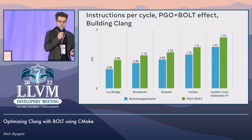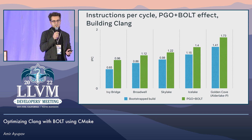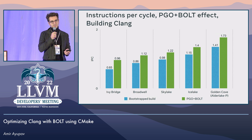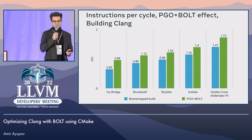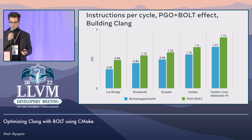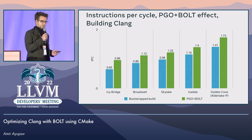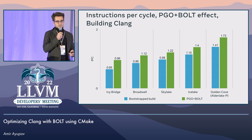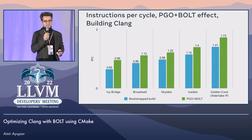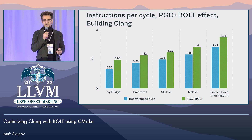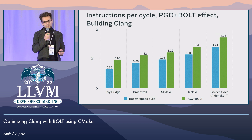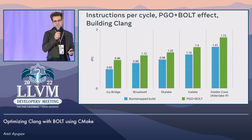For each architecture there are two bars: the first is IPC for the baseline bootstrapped build, and the second is for PGO plus Bolt. The trend is that with PGO plus Bolt, Ivy Bridge jumps over the Broadwell baseline. Same with Broadwell jumping to Skylake, Skylake to Icelake, and Icelake with PGO plus Bolt jumping to the Golden Cove baseline level.